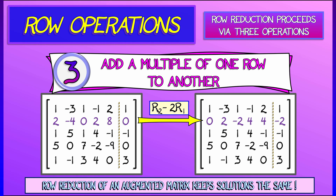There's one more operation — this is the hard one. This is a combination where you add a multiple of one row to another row. In this case, I'm taking row two and replacing it with row two minus twice row one. You can do this with any two rows and with any scalar multiple. This is going to be very useful in reducing an augmented matrix to upper triangular form while keeping the solutions the same.